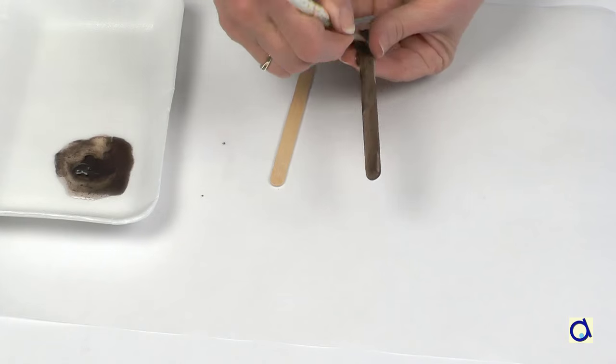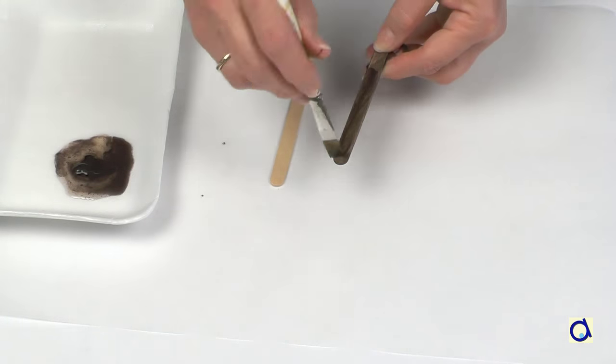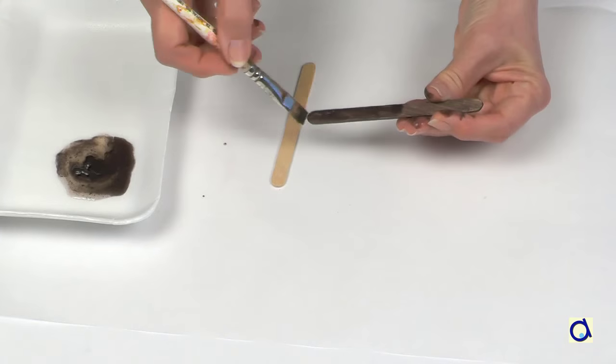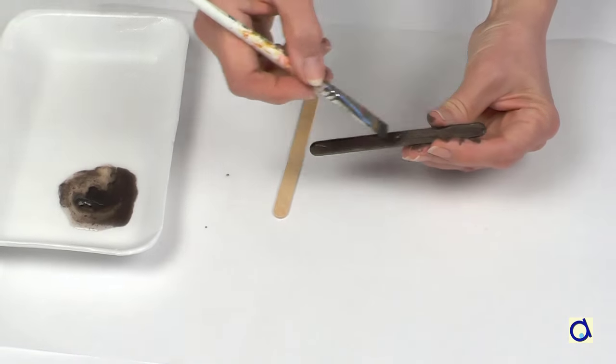Instead of a clothespin, you could use popsicle sticks. For one butterfly, paint two popsicle sticks in the color of your choice.